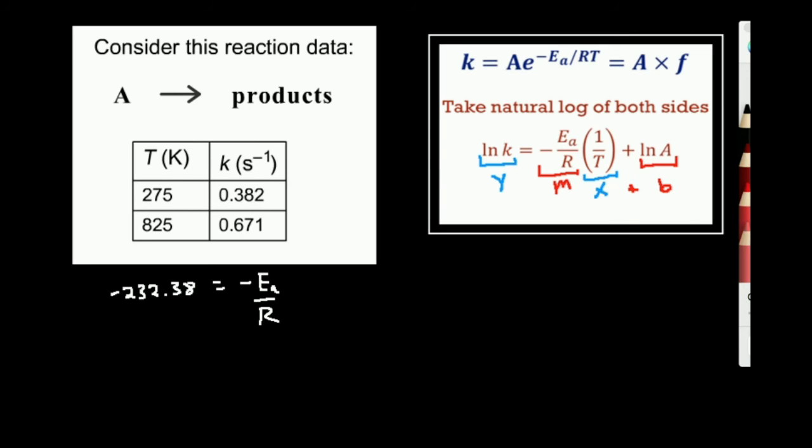Now notice we can go ahead and cancel out the negative signs because they're on both sides. So that means if I multiply 232.38 times the ideal gas constant, let's use the value 8.314. The reason I do that is because this form of the gas constant has joule units, joule per mole kelvin.